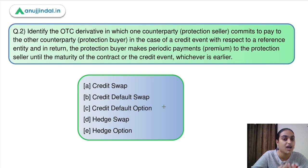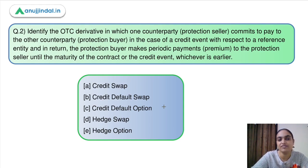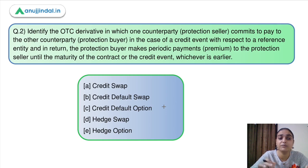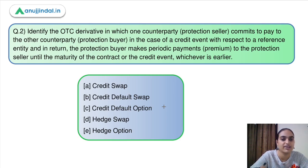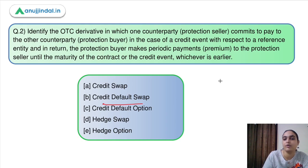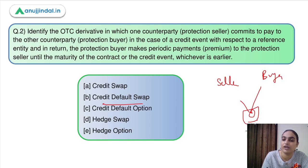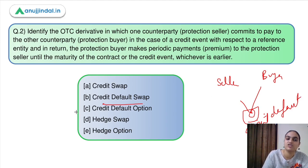This was all about the set of directions. Moving to question two: identify the OTC derivative in which one counterparty commits to pay the other in case of a credit event with respect to a reference entity, and in return the protection buyer makes periodic payments as premium to the protection seller until maturity or credit event. This is a credit default swap — answer is option B.